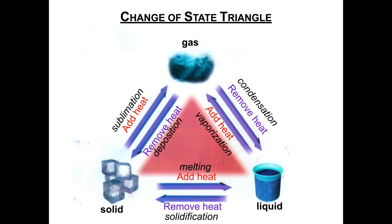Those are the different changes of state, set up in a more organized and visual way than in the notes from last time. Hopefully that helps you understand what's happening during the different changes of state. I'll have another video about changes of state attached to this post that you can watch after. That was the change of state triangle — I hope you learned how to keep track of the different types of changes of state. That'll be something you'll need for a test later on. Talk to you again soon. Bye.